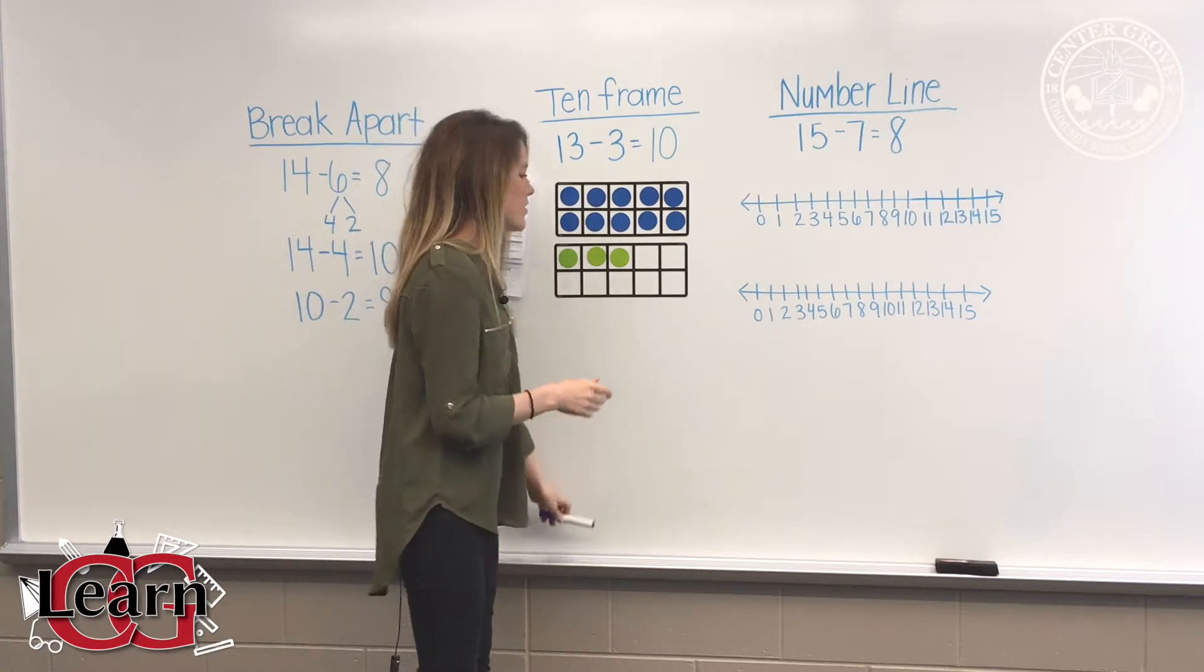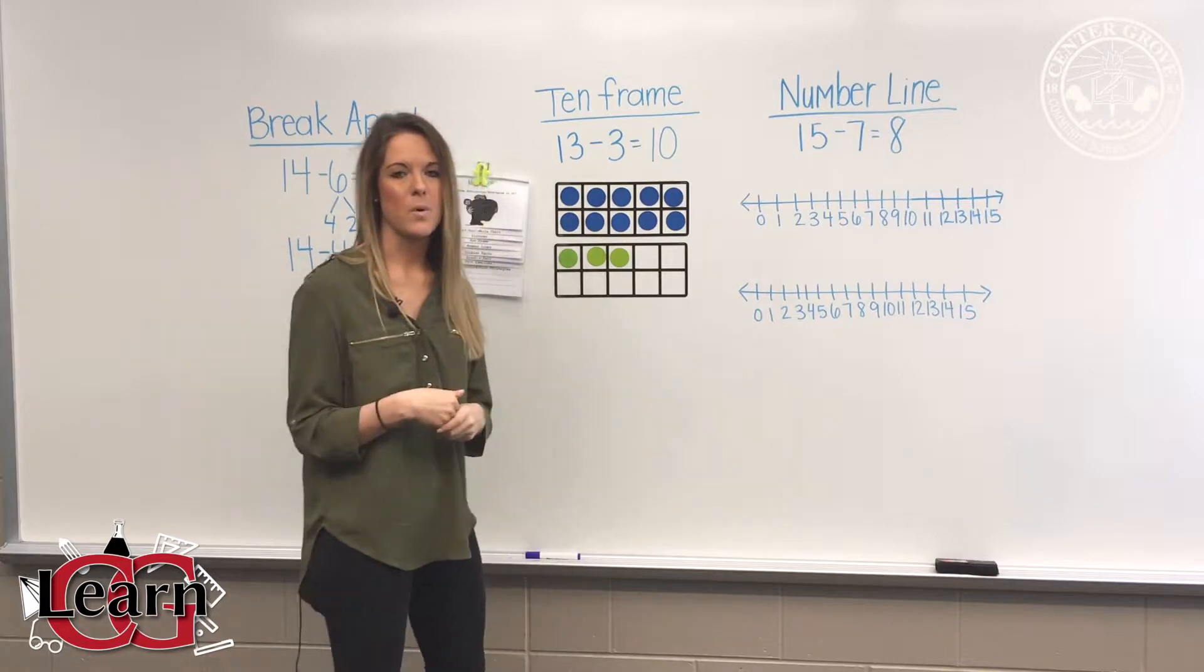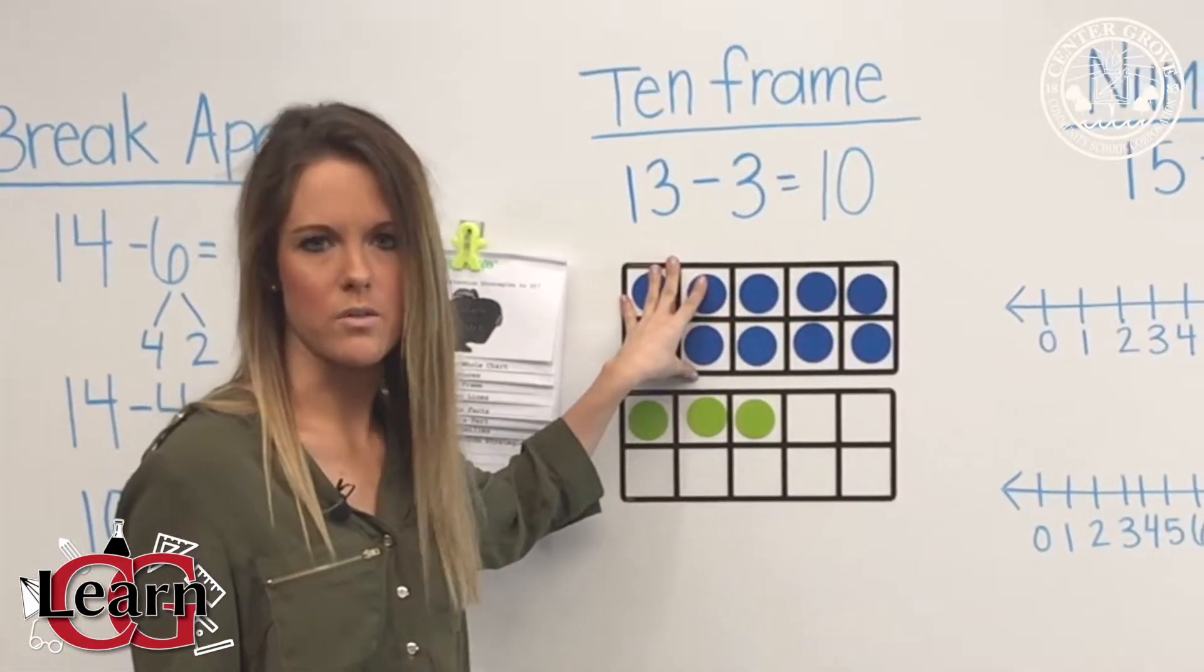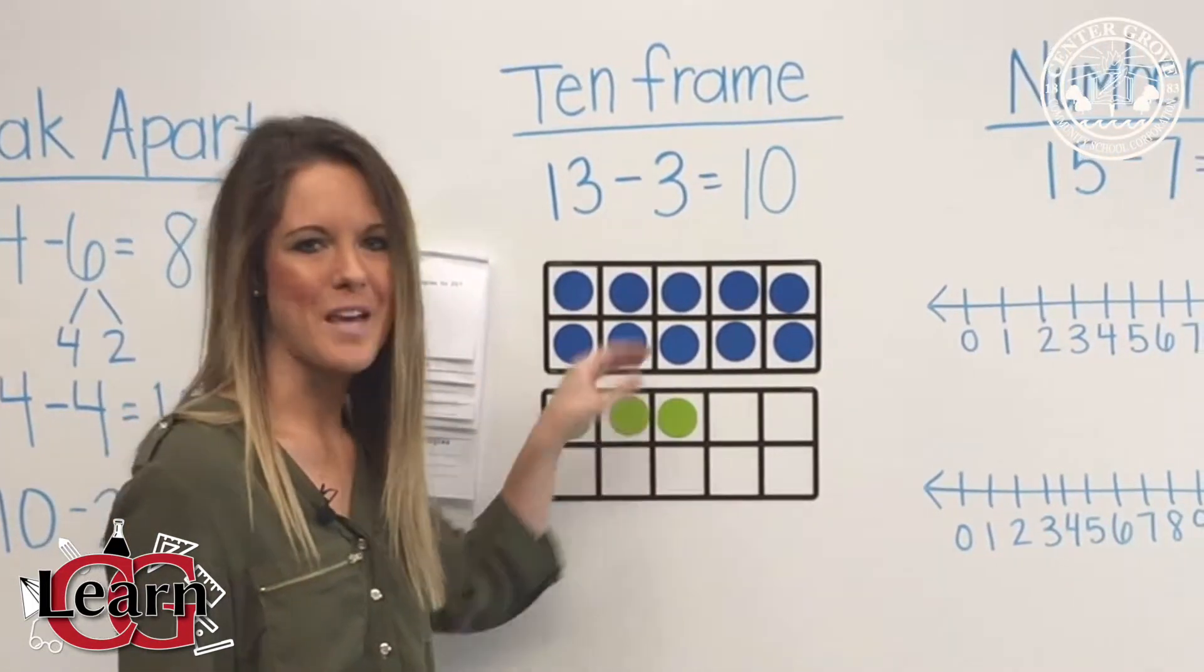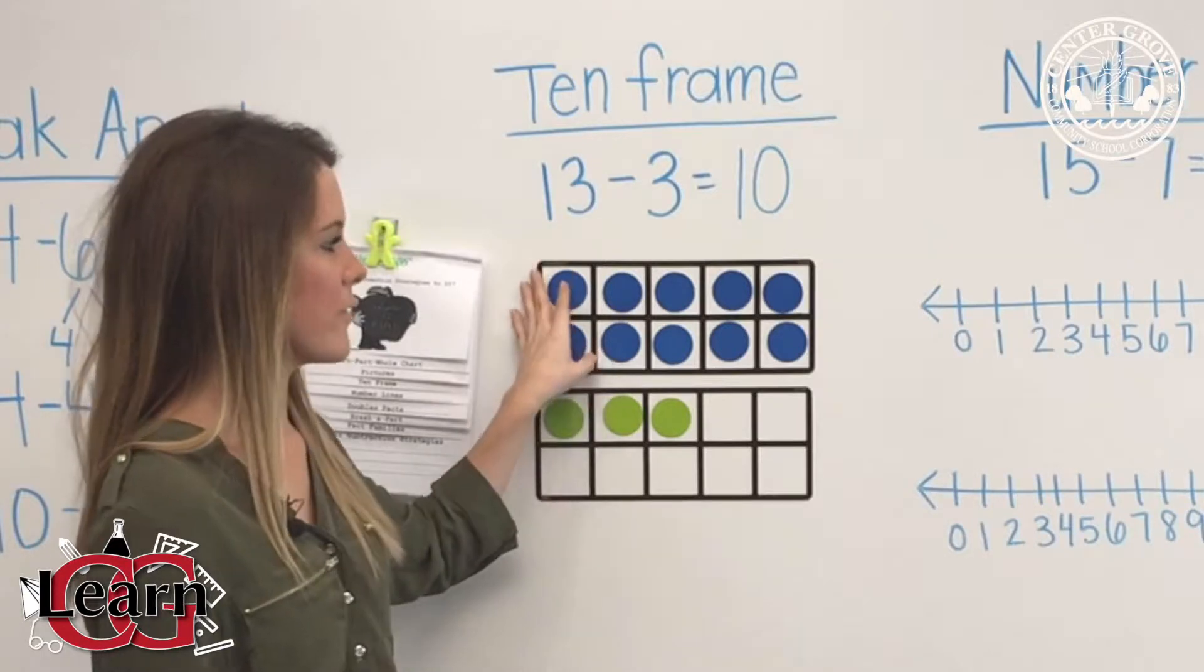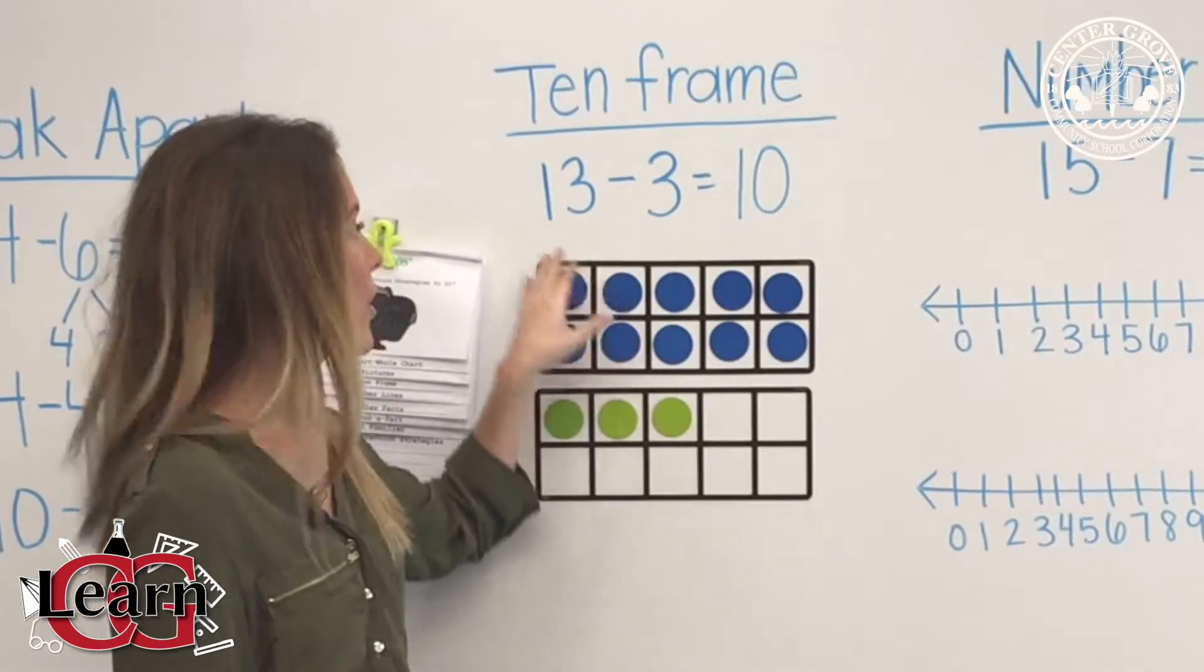Over here we have our ten frame. When we do two-digit or up to 20, sometimes the kids get confused because they're like, a ten frame only goes to 10, what do I need to do? Well, you're allowed to draw two ten frames. So you can go ahead and draw your two ten frames, and you fill up the first one with your 10 and then 3 for our 13.